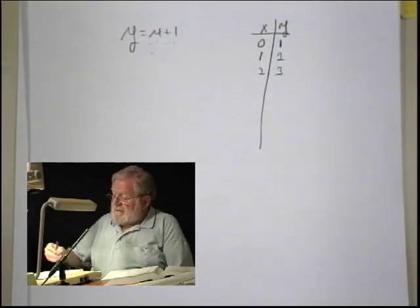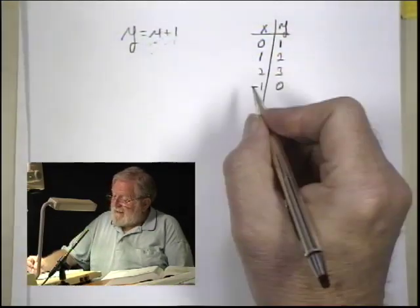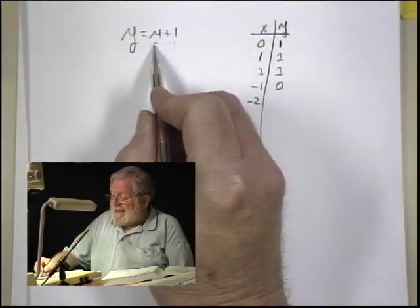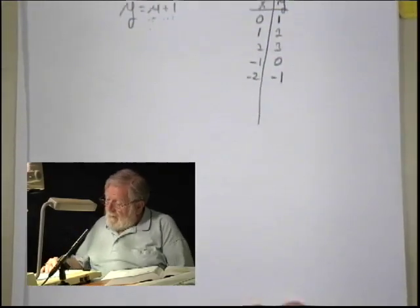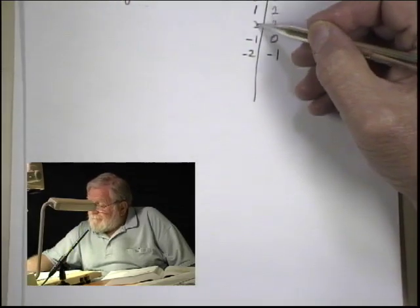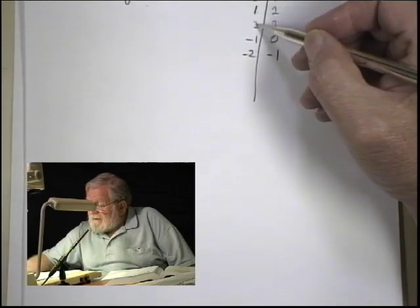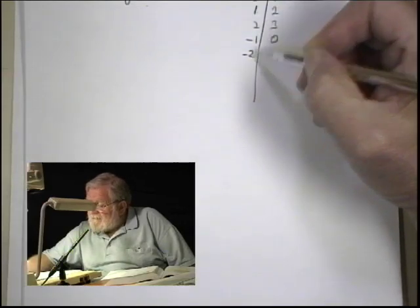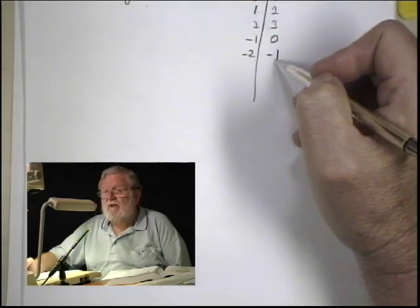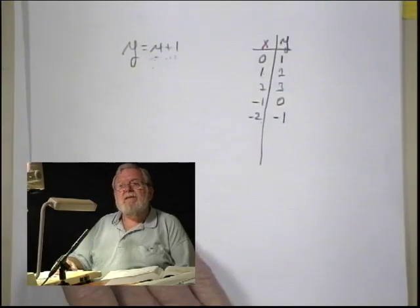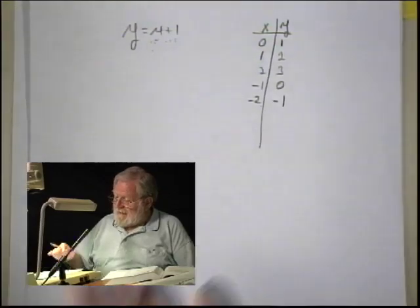If x equals negative 1, we'd have negative 1 plus 1, which equals 0. Each is a different value for x, so we're not generating the same values for x. This so far looks like a function, and we'll show you a simple test in a bit to confirm that.